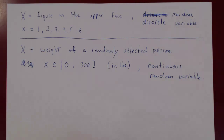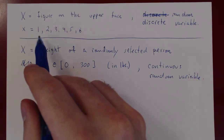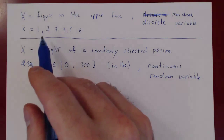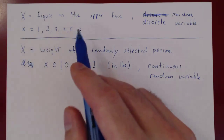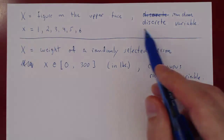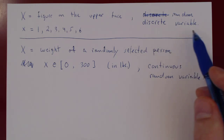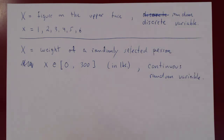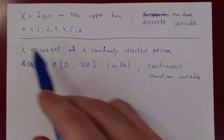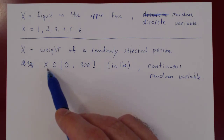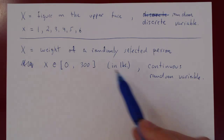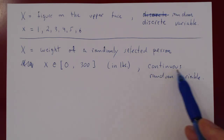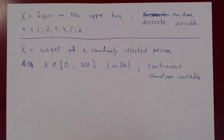That is the main distinction: if you can count, one at a time, the values that X can take on, it is a discrete random variable. If the values of X are ranging over an interval of real values, we say it is continuous.